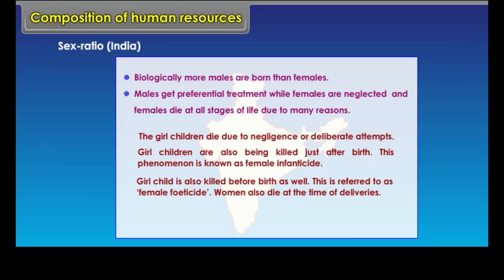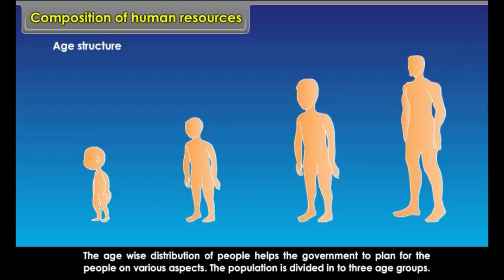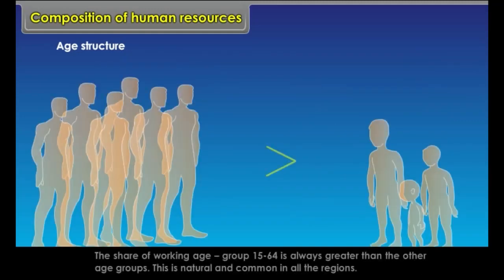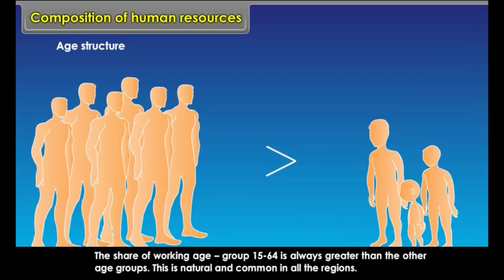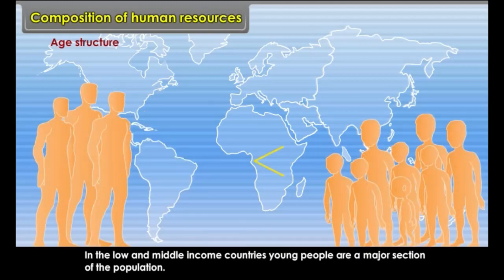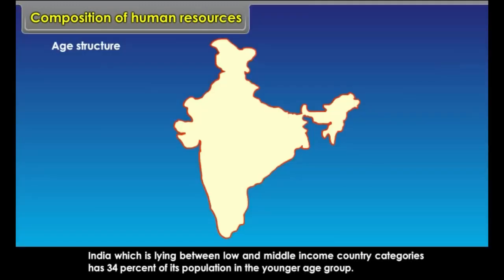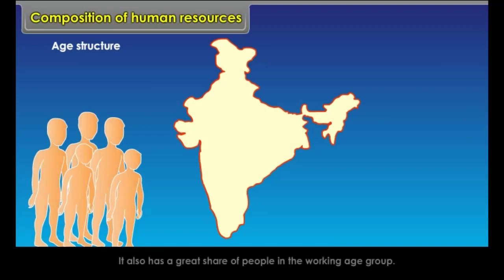Age Structure: The age-wise distribution of people helps the government to plan for the people on various aspects. The population is divided into three age groups: 0 to 14 years, 15 to 64 years, and 65 years and above. The working age group (15 to 64) is always the largest. In high and middle income countries, a high proportion are in the working age group; in low income countries, young people are a major section. India has 34% of its population in the younger age group and also a great share in the working age group.